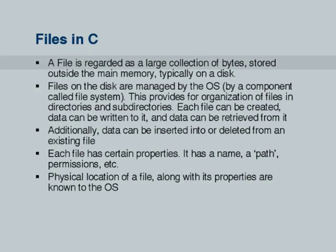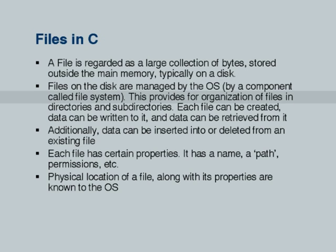What are files? A file is regarded as a large collection of bytes stored outside the main memory, typically on a disk. Disk files are the most familiar, but there are files associated with other devices as well. Files on disks are managed by the operating system, which has components such as memory management, process management, and file management. The file system of the operating system handles management of data on disks. Files are organized in directories and subdirectories. Each file can be created, we can write data to it, and we can retrieve or read data — create, read, and write are natural operations.